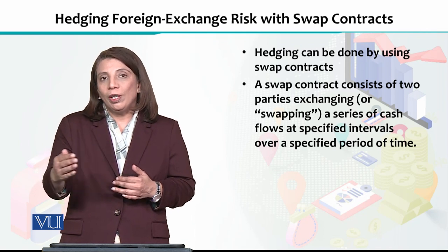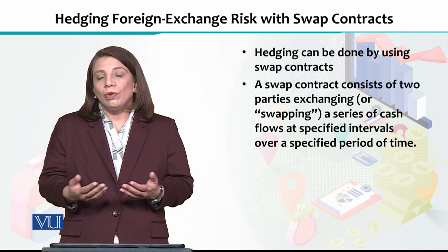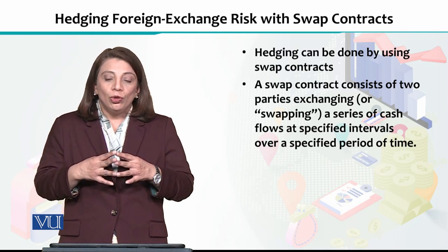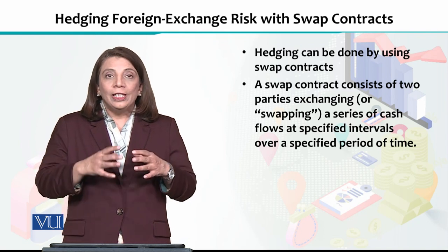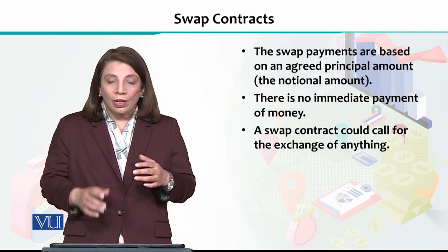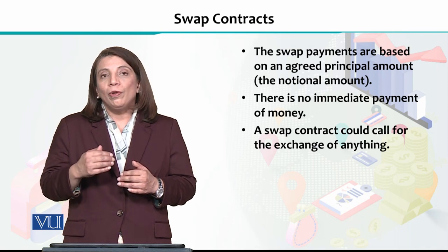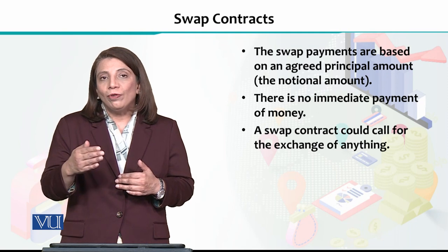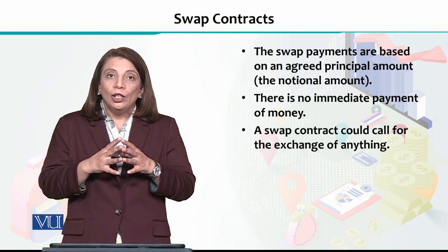When multiple cash flows occur over a period of time, investors have an option called swap contracts. Swap contracts involve a series of cash flows at specified intervals over a period of time. This is like making forward contracts, but because the cash flows are multiple rather than one-time, we use swap contracts.